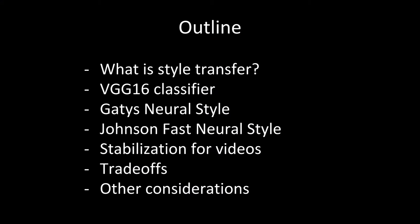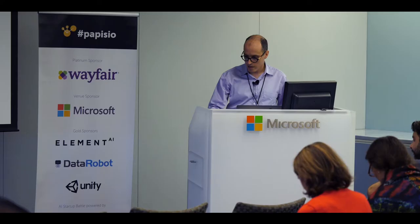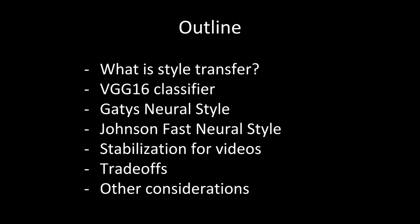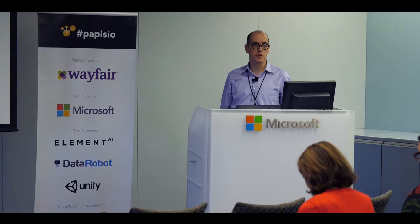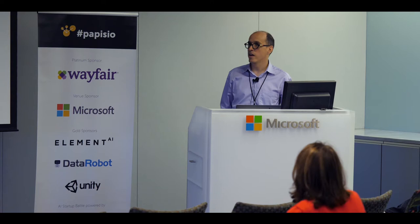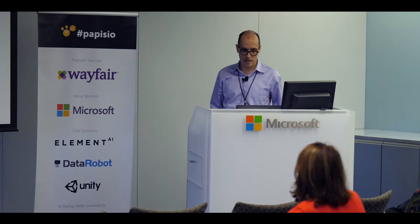So the outline: I'll be covering what is style transfer, just to give base knowledge to everybody. Discussing the VGG16 classifier. I'll be talking about Gatys' Neural Style, which is the landmark paper that started this whole field. Johnson's Fast Neural Style, which improved it. Then I'll discuss our improvement — how we stabilized it for video and made possible the demo. Then I'll discuss trade-offs and other considerations at the end.